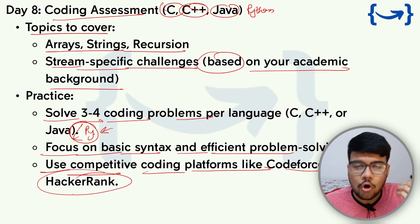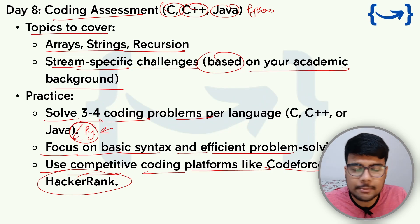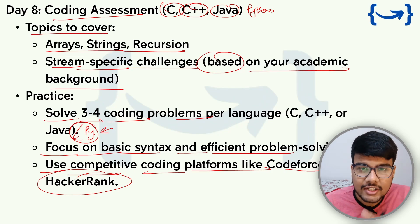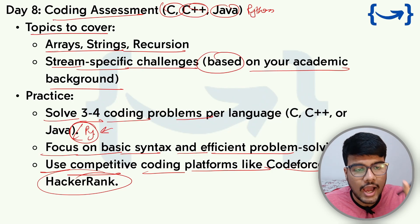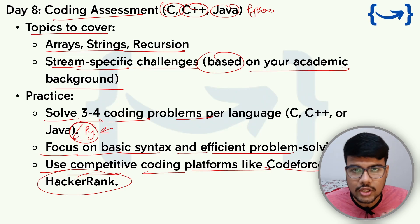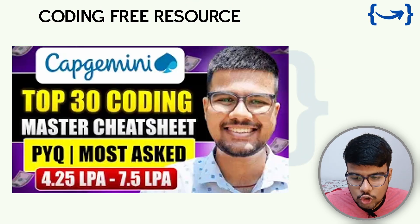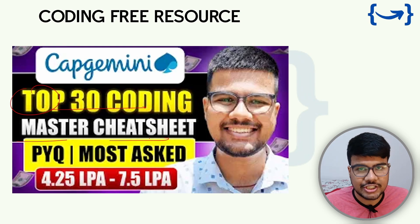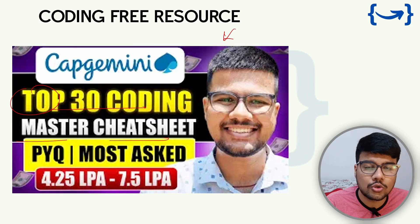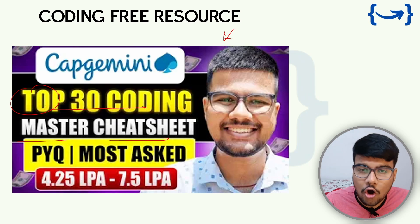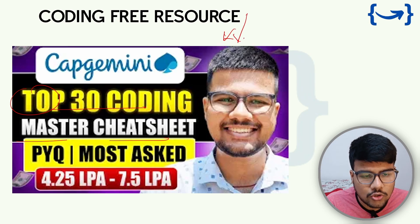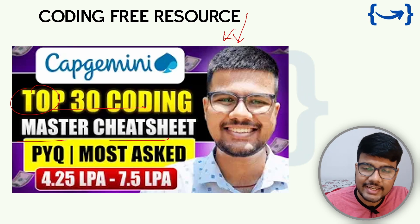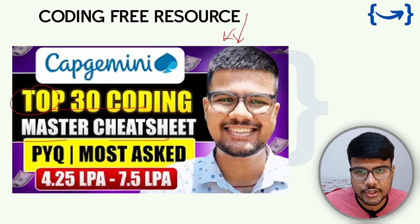Use competitive coding platforms like Codeforces or HackerRank to practice solving problems within a given time limit, since many candidates who can solve problems at home start struggling under timed conditions. Give contests to overcome this fear — the timer will condition you to solve within the time duration. A top 30 coding cheat sheet with all PYQs and recently asked questions for the 2024 batch is also available. Let me know in the comments if you want a full playlist of solutions.